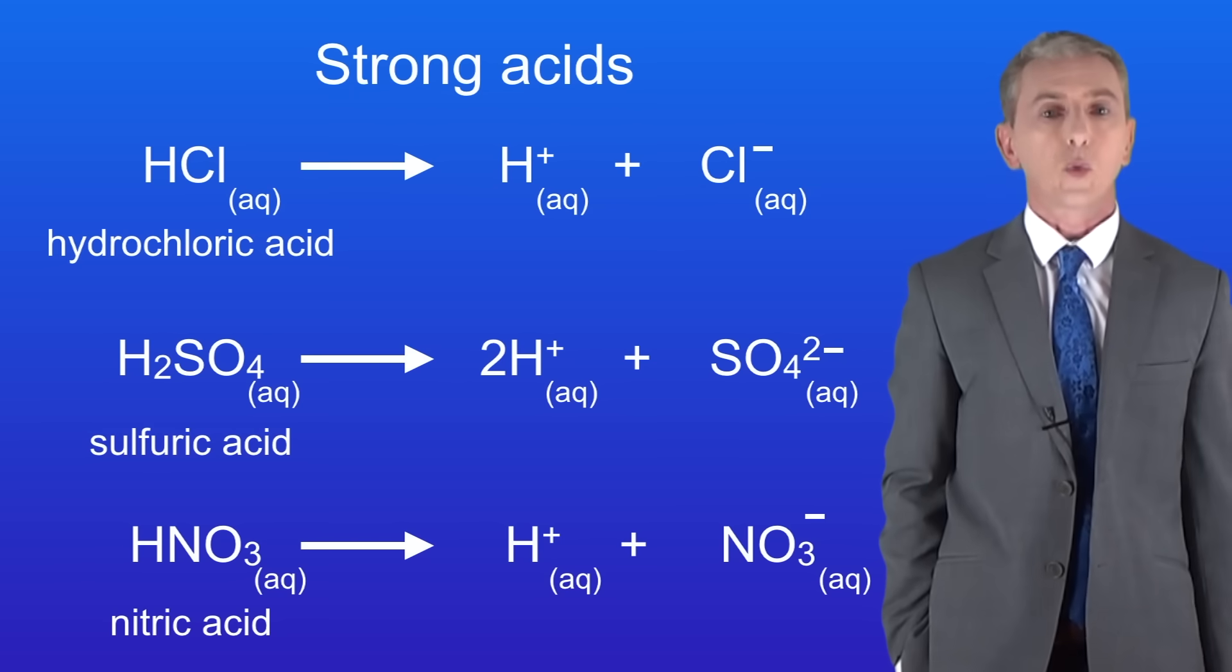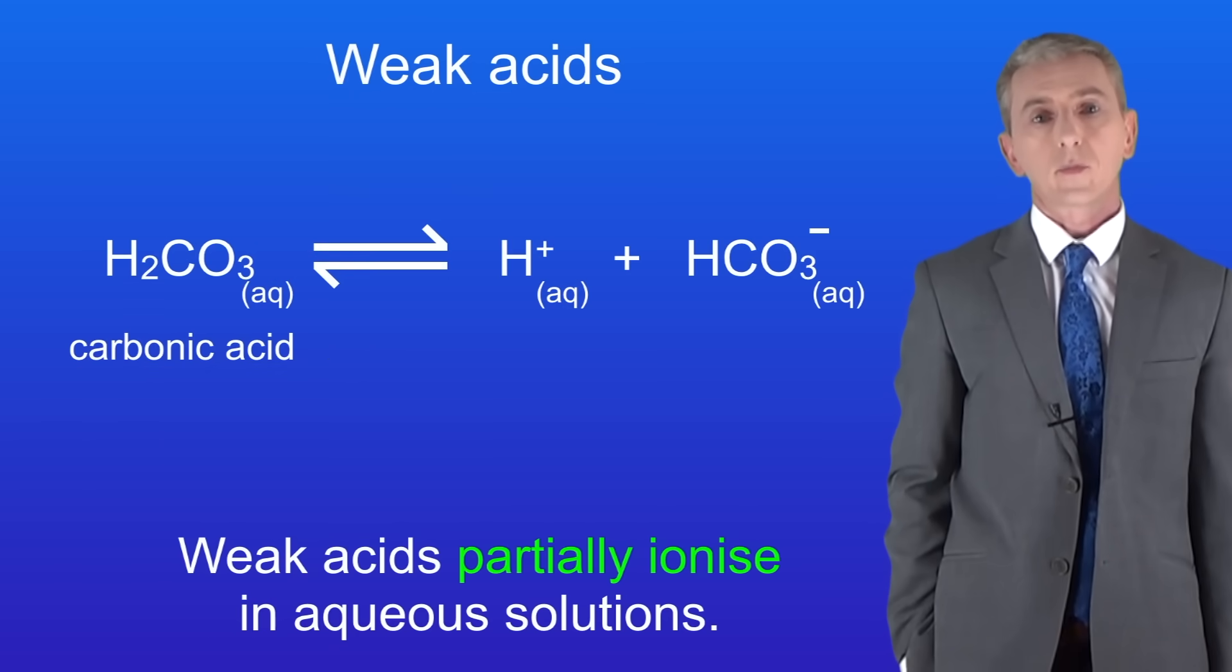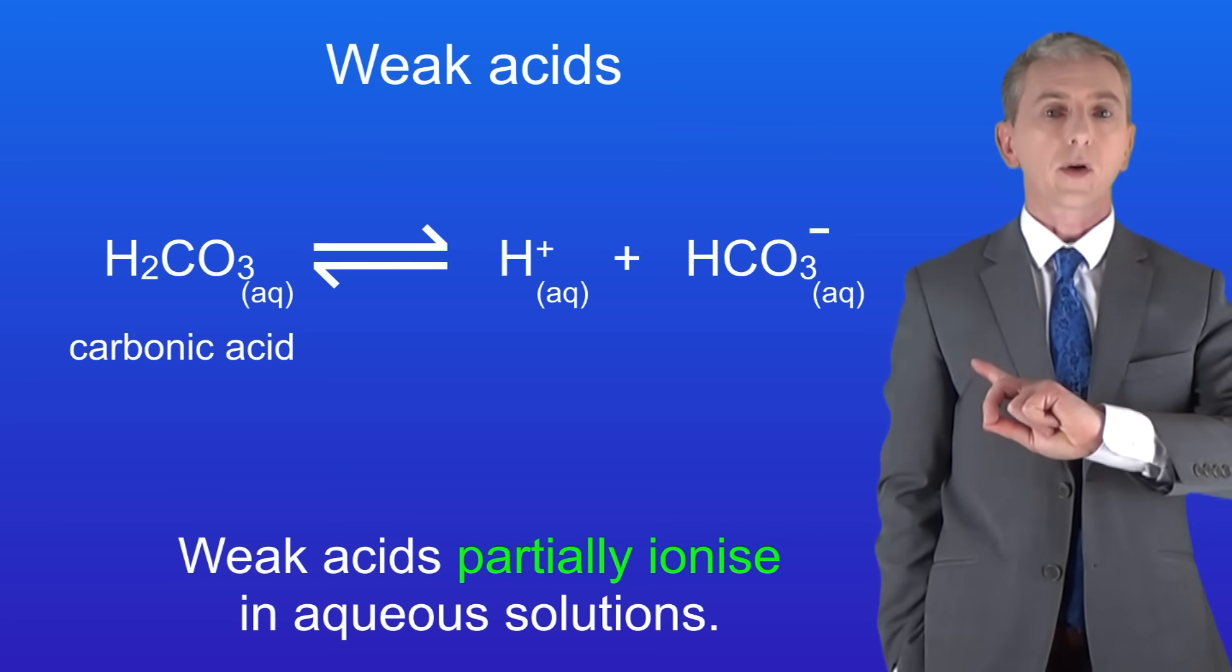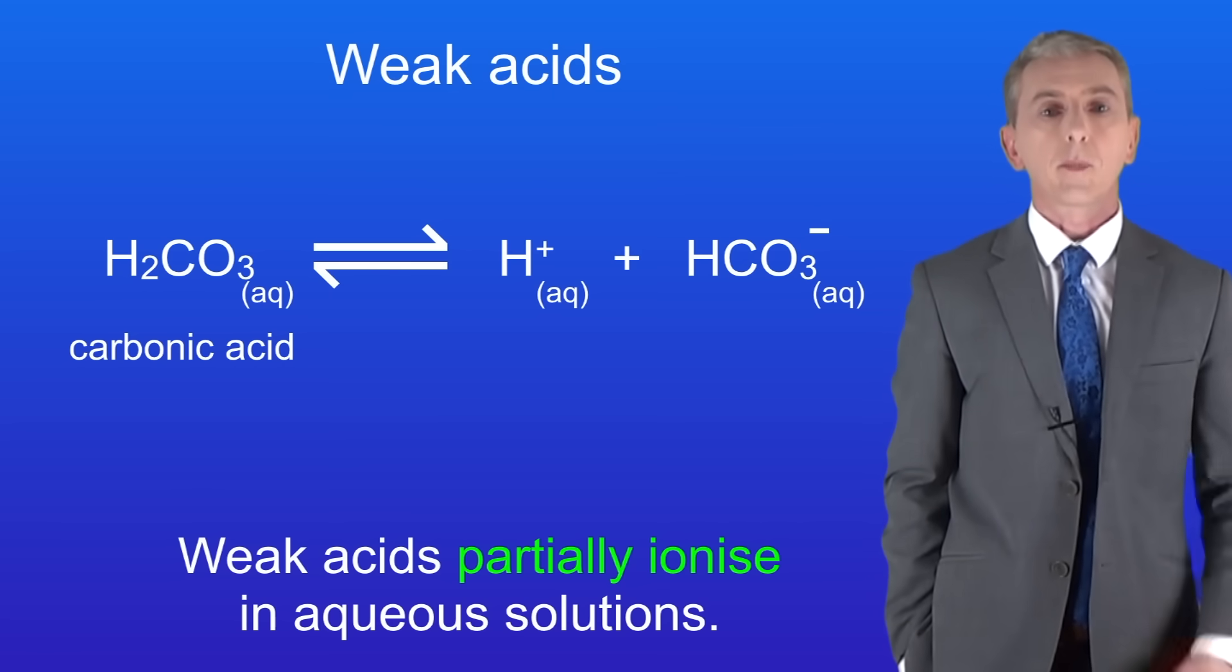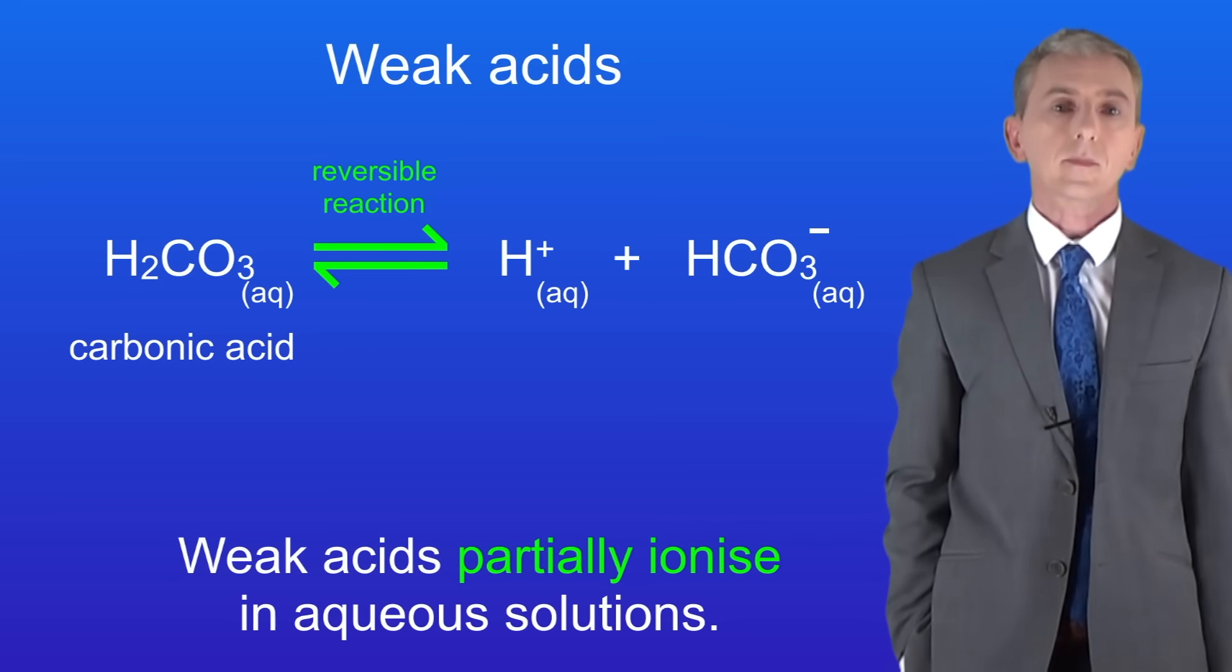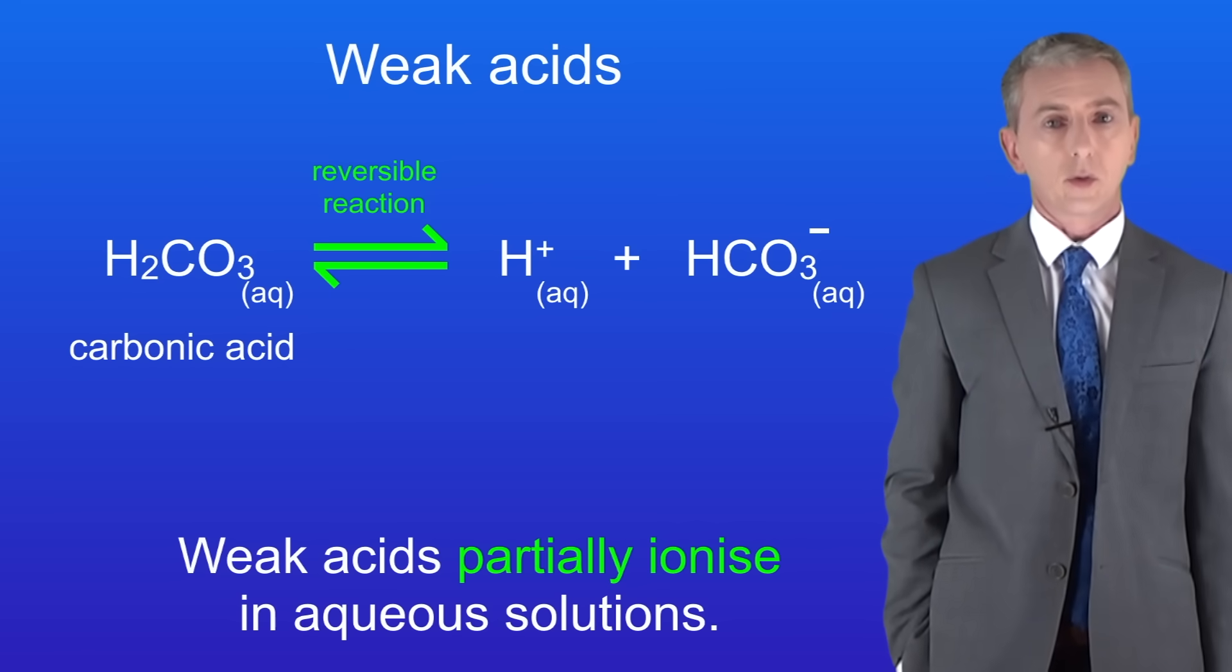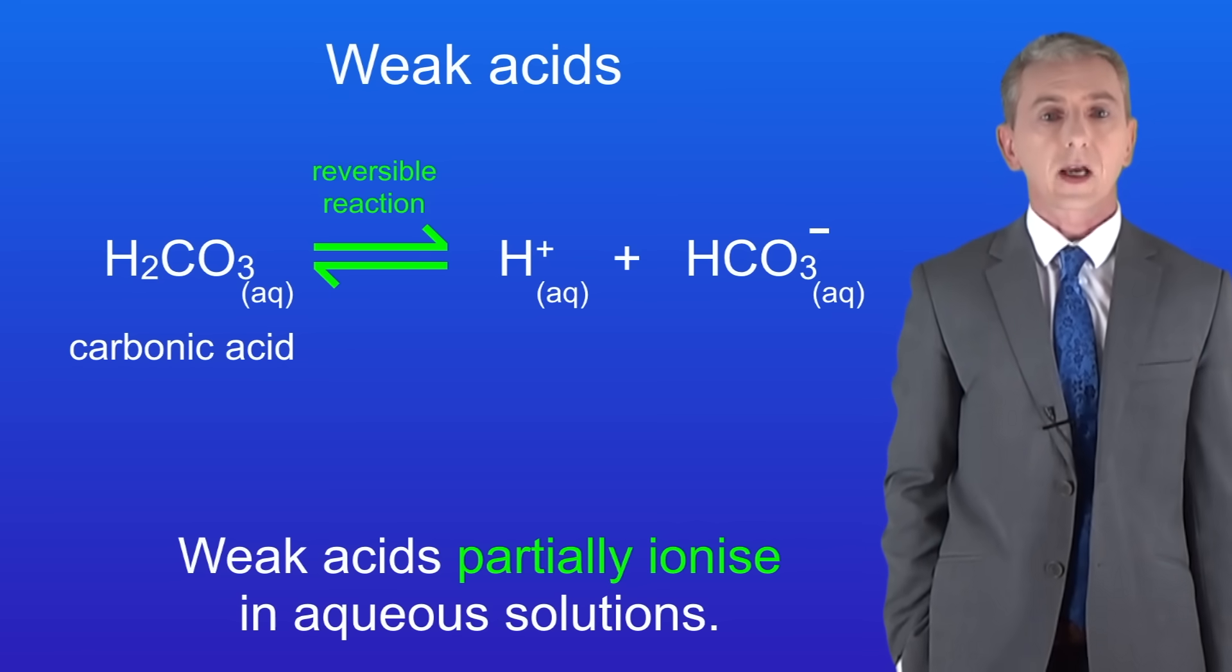So let's take a look now at weak acids. I'm showing you here the weak acid carbonic acid. We can tell this is a weak acid from this arrow. This is a reversible arrow. This means that some of the acid molecules ionize but not all of them.